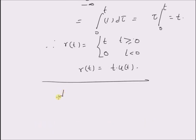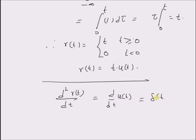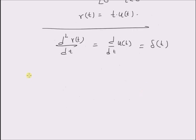We can also easily derive that the second derivative of the ramp signal is equal to the derivative of the unit step signal, because the first derivative is u of t. And we know that the derivative of u of t is the impulse signal. Therefore, the first derivative of the ramp signal is the unit step signal and the second derivative is the impulse signal.